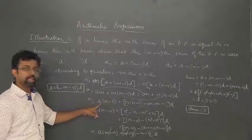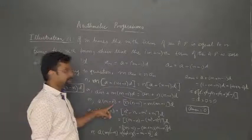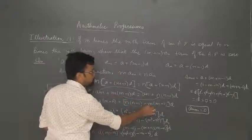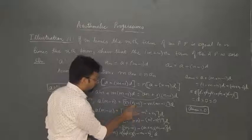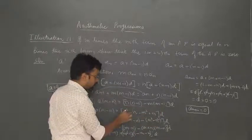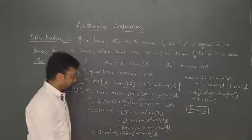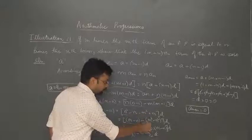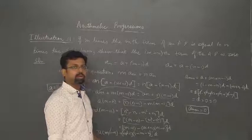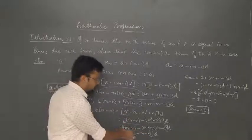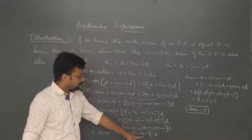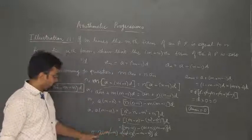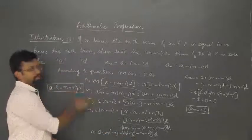We bring a terms together and d terms together. On the a side we factor out a and get (m minus n). On the d side we factor out d and get n(n minus 1) minus m(m minus 1), which simplifies to n squared minus n minus m squared plus m. Grouping n squared minus m squared and minus n plus m, we apply the difference of squares identity a squared minus b squared equals (a+b)(a minus b). We get (m minus n) as a common factor, cancel it from both sides, and obtain a equals [1 minus (m plus n)] into d.